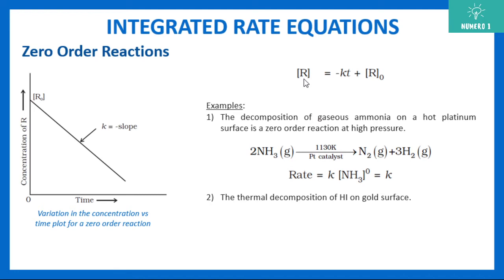If you want to represent this in a graph, R equals minus kt plus R naught. So if y-axis is concentration of R and x-axis is time, this is y equals mx plus c — a straight line where the slope is minus k and R naught is your y-intercept. Some examples of zero order reactions: 2NH₃ gives N₂ plus 3H₂, and thermal decomposition of HI on a gold surface. This graph and this derivation are both exam questions.